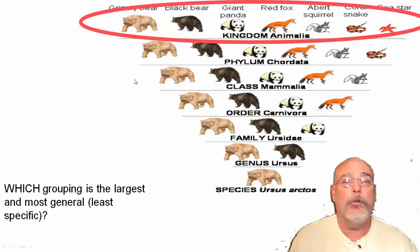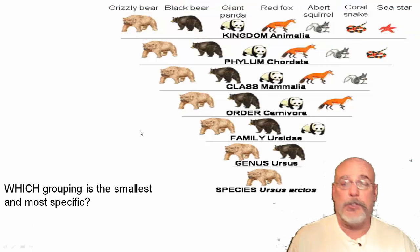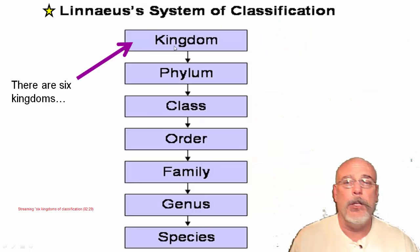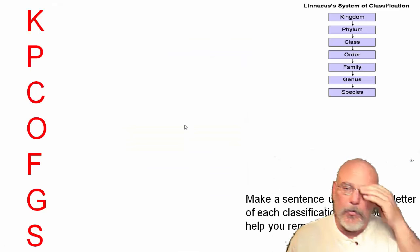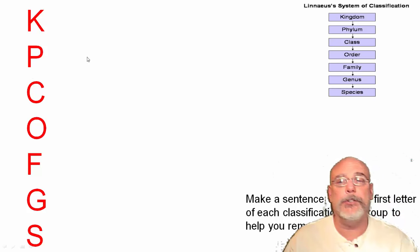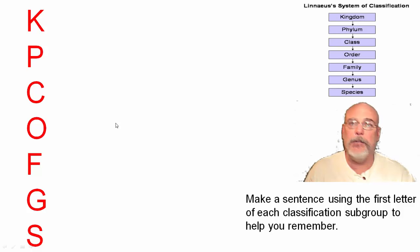Which of these groups — kingdom, phylum, class, order, family, genus, species — is the largest and least specific? That would be the kingdom, which contains far more organisms than any other level. The most specific is the species, where there may be only one. Linnaeus's classification system has six kingdoms, then breaks down to phylum, class, order, family, genus, and species. You'll need to know these subgroups, and one way to remember them is to take the first letter of each and make a sentence.